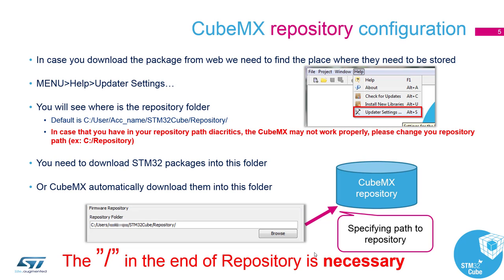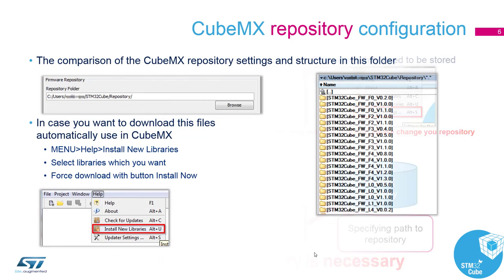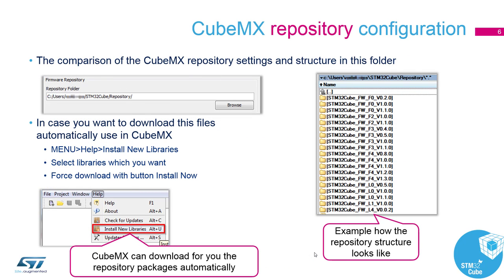If you don't add the backslash to the repository path, sometimes it happens that you get errors during generation in the motor control workbench. You can check in the updated settings which slash is after the repository path. In the repository, you can find all downloaded packages and all code. CubeMX requires packages for families. In the repository, you can find your downloaded packages and also install new libraries.